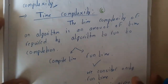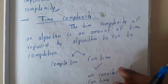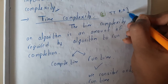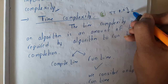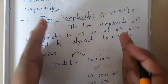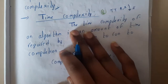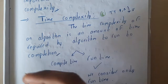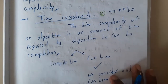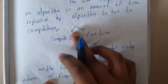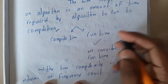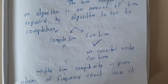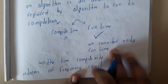Basically, time complexity is the time taken by a program or an algorithm to complete its execution. We will be considering only the run time, not the compilation time. The time complexity of an algorithm is the amount of time required by an algorithm to run to completion. Time can be divided into two types: compilation time and run time. We consider only run time, since compilation time depends on various factors.